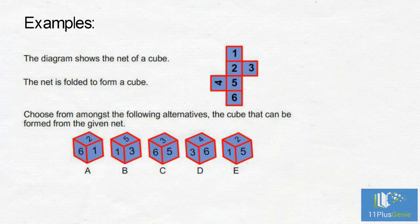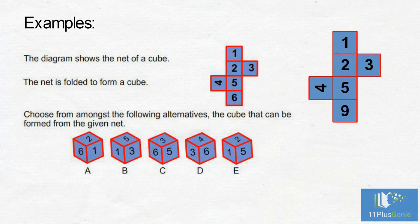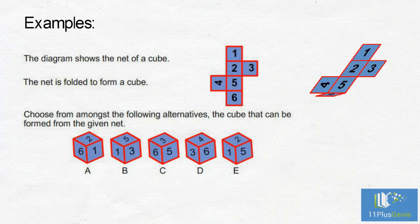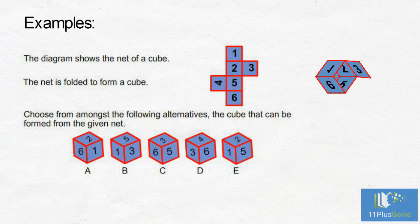Example Number 1: You are given a net of a cube and must find from amongst the answer choices the cube that can be formed from the net. Let's look at an animation on how this cube will be formed. We can identify the numbers that will be opposite each other and start to eliminate the wrong answer choices.